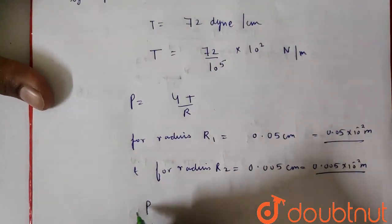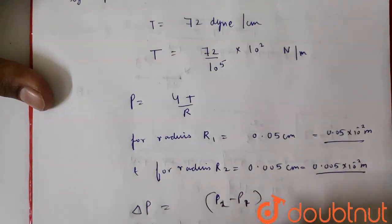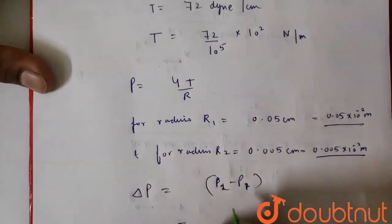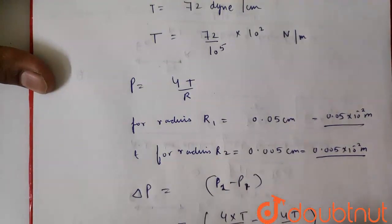Difference in pressure will be delta P equals P2 minus P1. So P2 is equal to 4 times T by r2 minus 4T by r1.